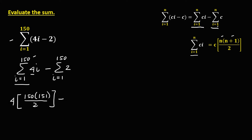Then minus: for the summation of a constant, as I starts from 1, this notation is equal to the constant times N. The constant is 2, times N, where N is 150.